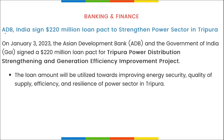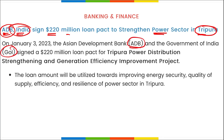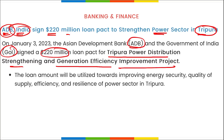Asian Development Bank and Government of India के बीच में 220 million dollar का loan pact sign हुआ है ताकि power sector को strengthen किया जा सके in Tripura. This is for Tripura Power Distribution Strengthening and Generation Efficiency Improvement Project — for better supply, efficiency, security, and quality of the power sector in Tripura।